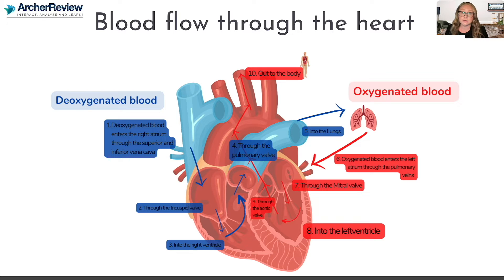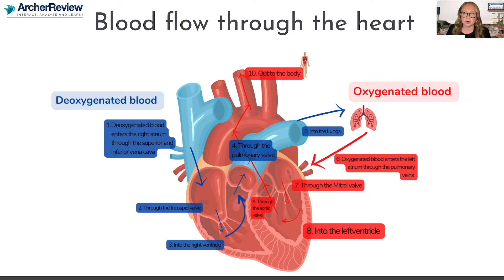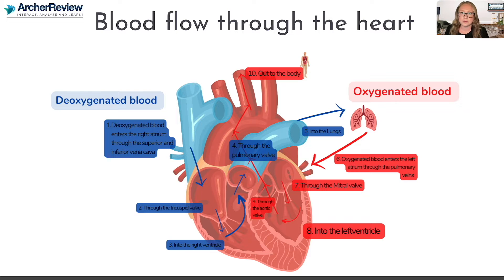Now we have to get into the nitty-gritty of exactly how that blood flows through the heart. Let's start with the body and that deoxygenated blood — it's going to return to the right atrium of the heart through two of the biggest veins in our body, called the superior and inferior vena cava. Notice those are in blue — we've got deoxygenated blood coming back to the heart into the right atrium.